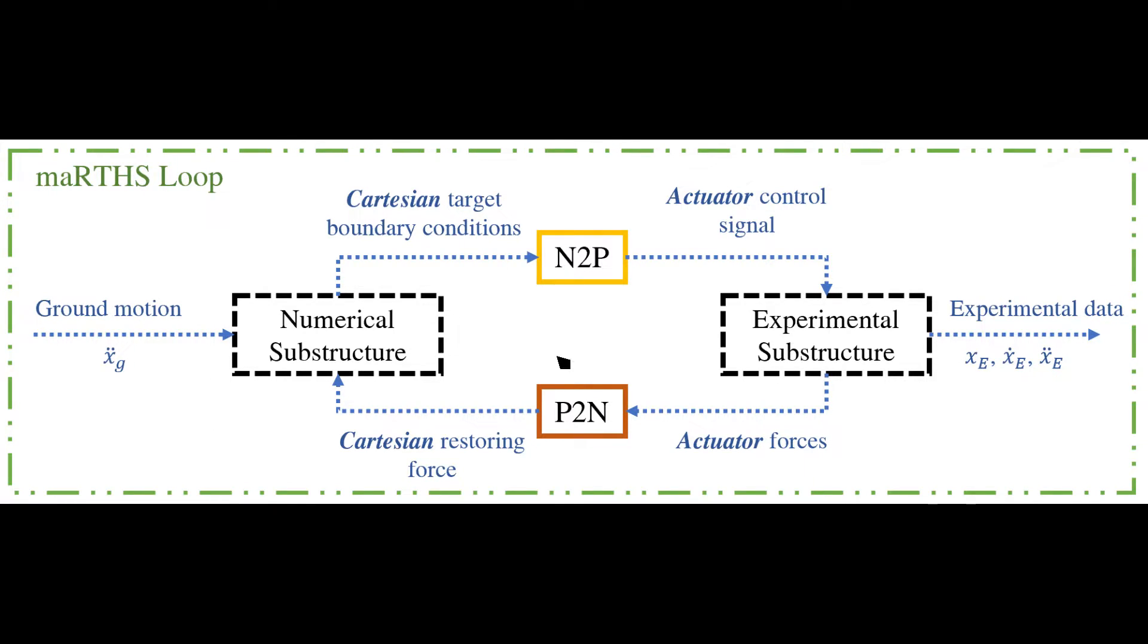The Cartesian target boundary points with the physical specimen are calculated and sent through a series of kinematic transformations and actuator compensation algorithms to obtain an actuator control signal which is executed by load and boundary condition boxes.